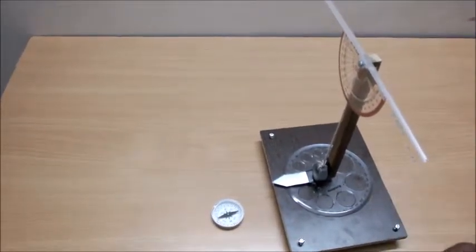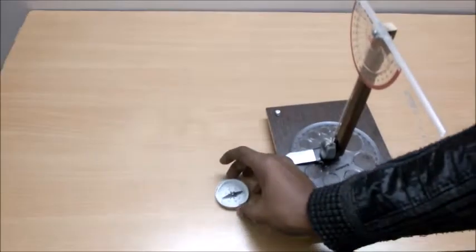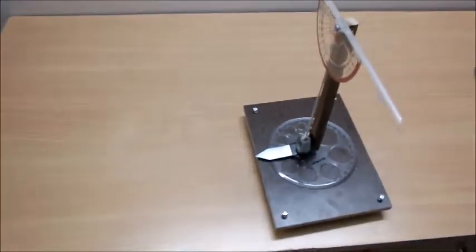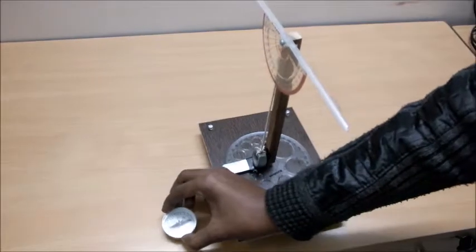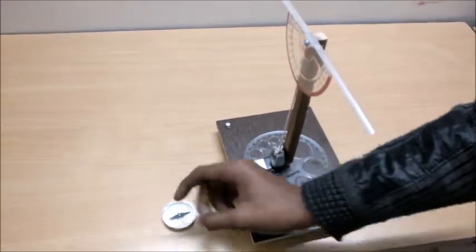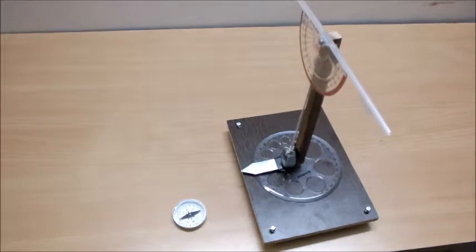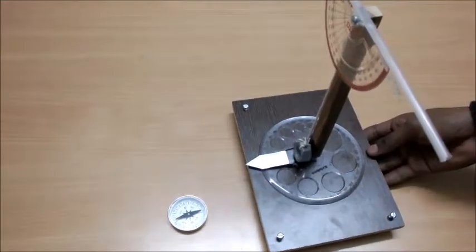Using the magnetic compass, we can easily find the north direction. Here the north direction is shown in this direction, so we will put this whole setup in the north direction. This metal arrow is pointed towards the north direction.